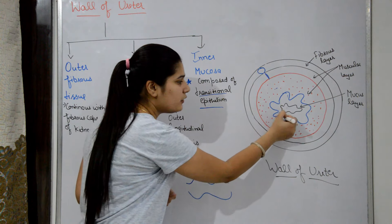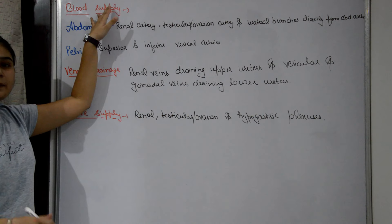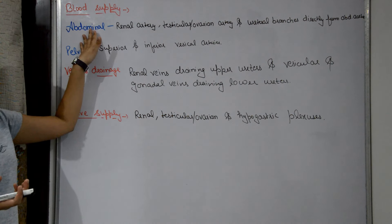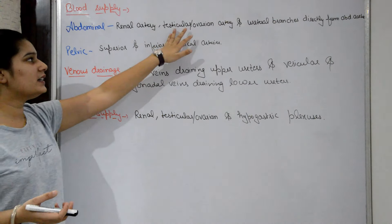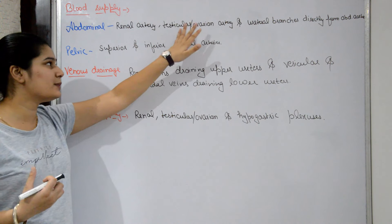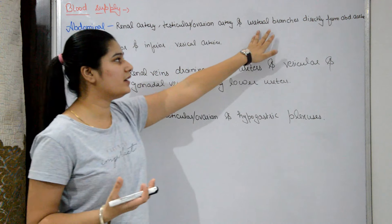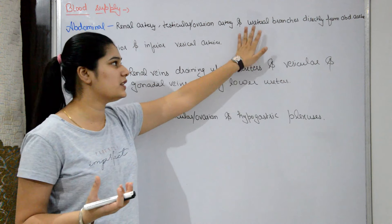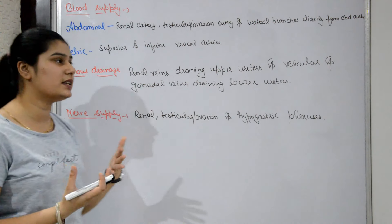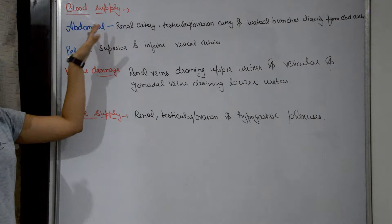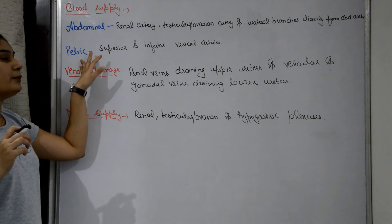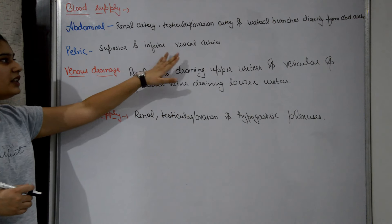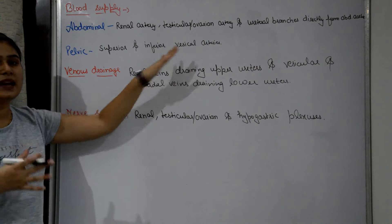The inner layer also has infolding. Regarding blood supply to the ureter: the abdominal ureter is supplied via the renal artery, the testicular artery in males or ovarian artery in females, and branches directly from the abdominal aorta. The pelvic ureter is supplied by the superior and inferior vesical arteries.